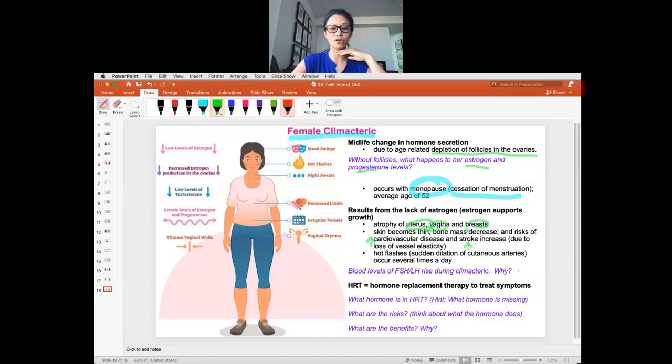But there are risks, because estrogen promotes growth, and by promoting growth, estrogen is going to increase the risk of cancer overgrowth. So there's decisions to be made by females how they want to handle their menopause and their climacteric. So this ends the male-female reproductive system. And if you have any questions, please email me.